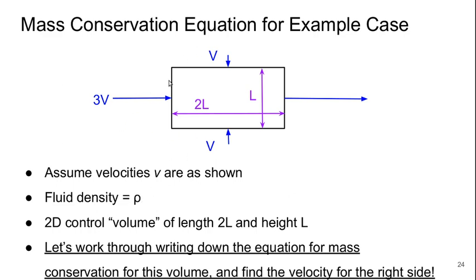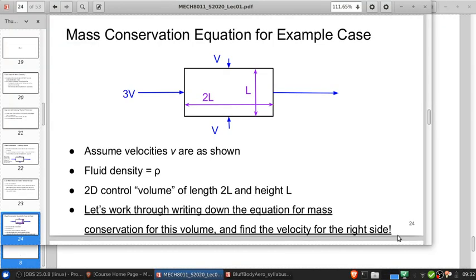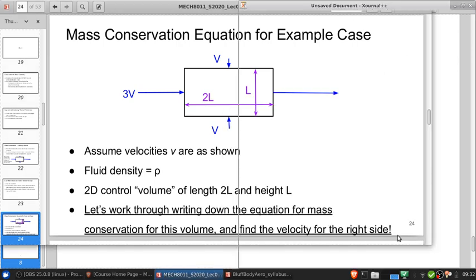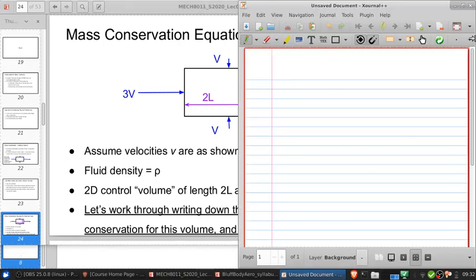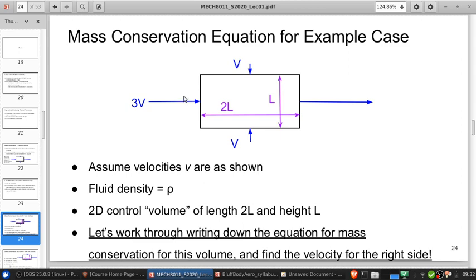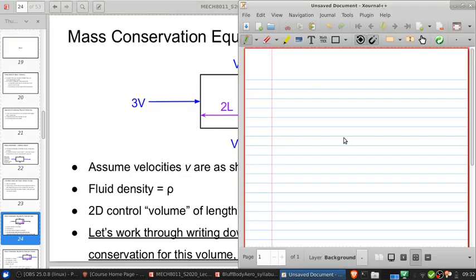We'll consider this just a 2D control volume, so it's really a control area, but we'll assume it has unit depth into the page. Let's work through writing down the equation for mass conservation for this volume and find the velocity for the right side.